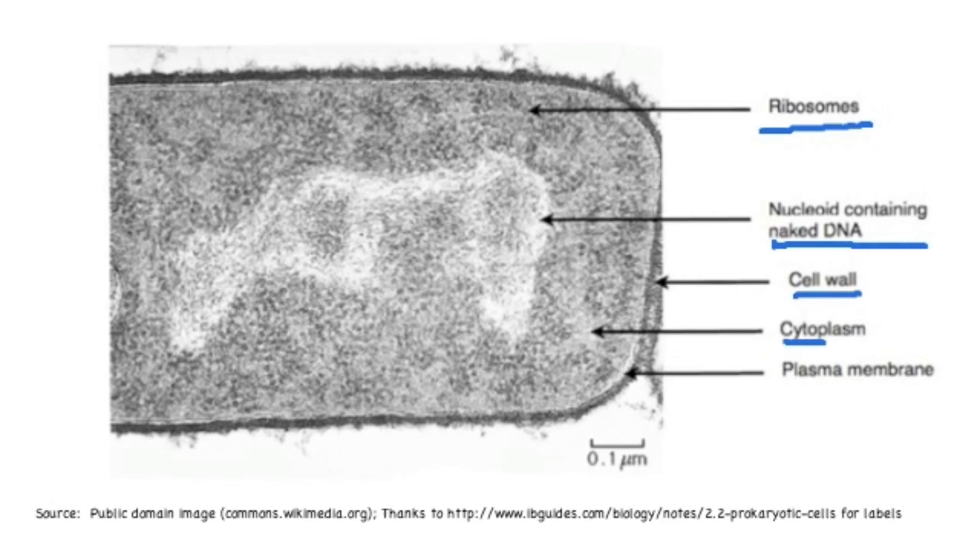The cytoplasm is the liquid portion of the cell containing the ribosomes or those black dots, so it's going to be darker than the nucleoid region but lighter than the ribosomes.